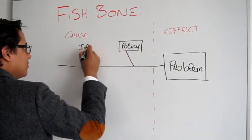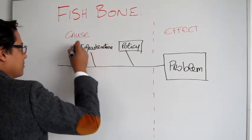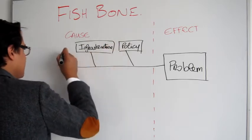Put the problem statement at the head of the fish. Then, on the bones of the fish, put possible themes, such as policies or people or infrastructure.